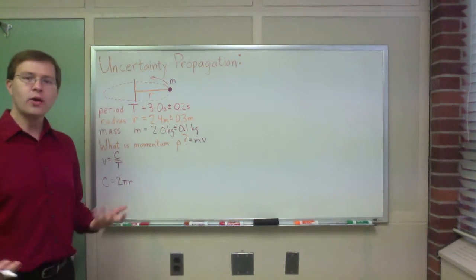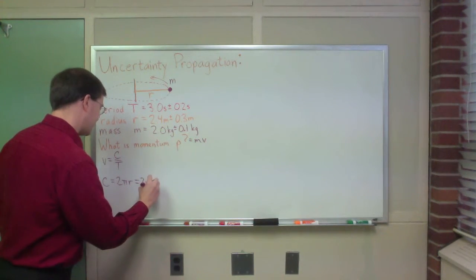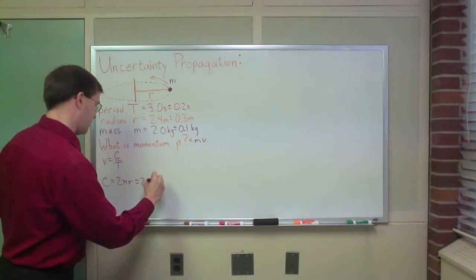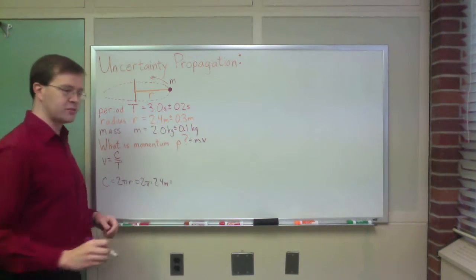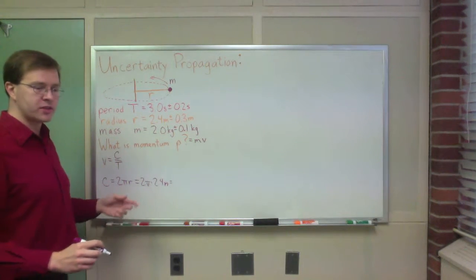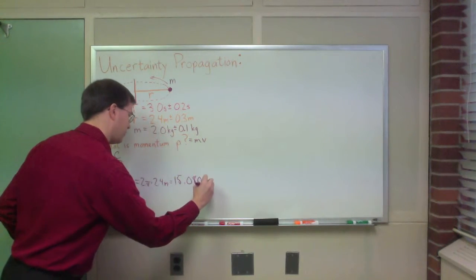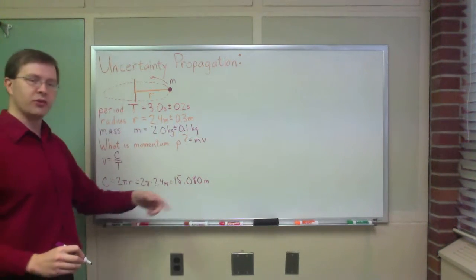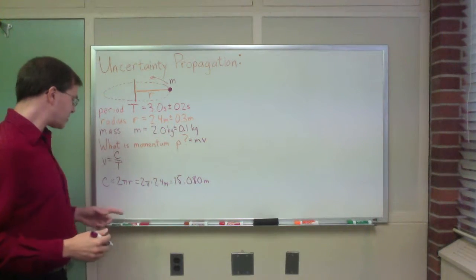Okay, so I can start putting this together. 2 pi r is 2 pi times, I said, 2.4 meters, which gives me, when I multiply that out, 2 pi times that 2.4 meters, I get 15.080 meters. Just to give you the number that I come up with, I'm not going to plug through calculators in front of you. So that's my circumference.